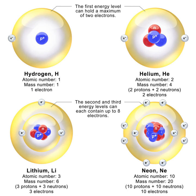For example, carbon has atomic number 6, and its abundant carbon-12 isotope has 6 neutrons, whereas its rare carbon-13 isotope has 7 neutrons. Some elements occur in nature with only one stable isotope, such as fluorine. Other elements occur with many stable isotopes, such as tin with 10 stable isotopes.